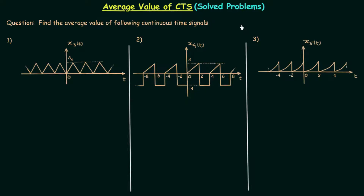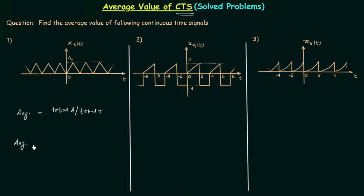In the previous lecture we saw how to calculate the average value of continuous time signals. The average value is equal to the ratio of total area to the total time. Using this, we obtain two different formulas. The first one is for periodic signals and the second one is for non-periodic signals. I will write down the two formulas quickly.